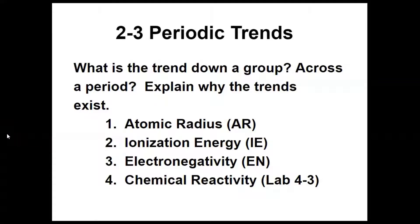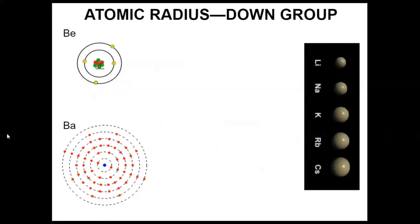This is discussion 2-3 on periodic trends. We're going to talk about four different trends: down a group from top to bottom, and across a period from left to right, and we're going to explain why these trends exist.